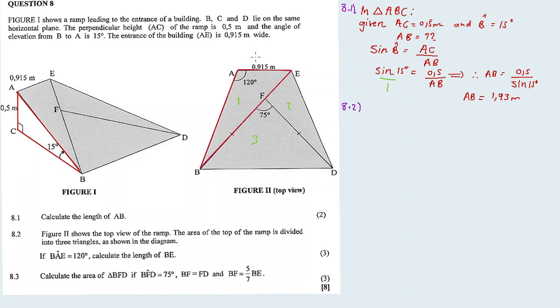We are going to use this triangle. Why? Because this triangle has more information than the other triangles. It has the length, angle, and more information which allows us to calculate BE. I just calculated AB, which is 1.93 meters.